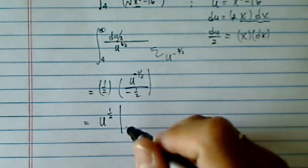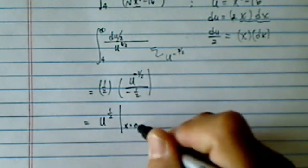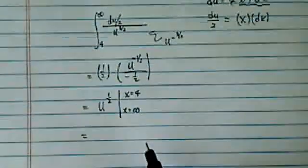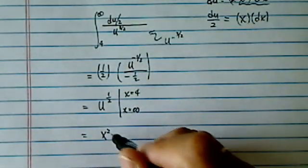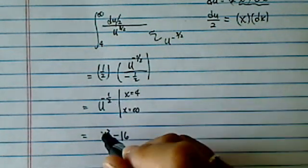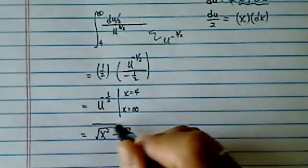Since it's a minus sign, let's just flip x equals infinity, x equals 4. So let's put it back in there, x squared minus 16. I think I missed the minus sign here. Square root 1 over. Evaluate it with x to infinity and x equals 4.